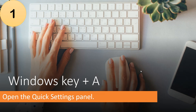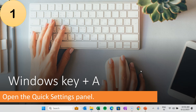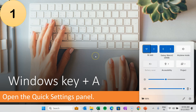The first one is Windows key plus A. To open the quick settings panel, press Windows key plus A on your keyboard. This quick settings panel will open from where you can change your Wi-Fi, Bluetooth devices, or Airplane mode, set your brightness, and change the volume.